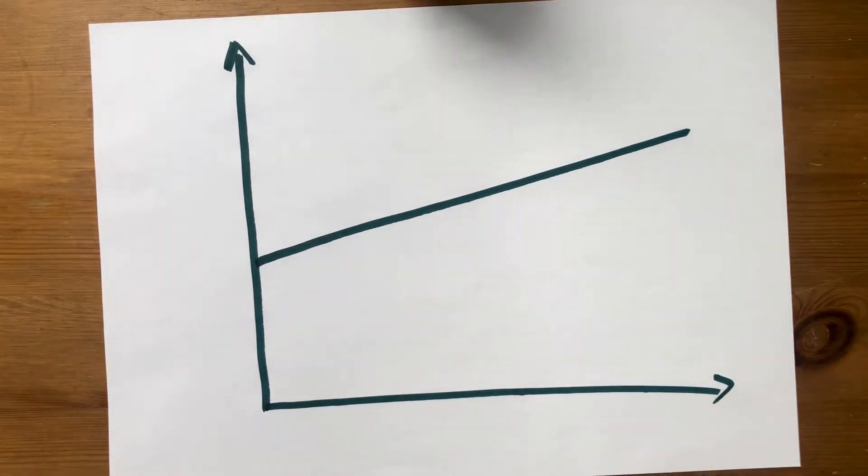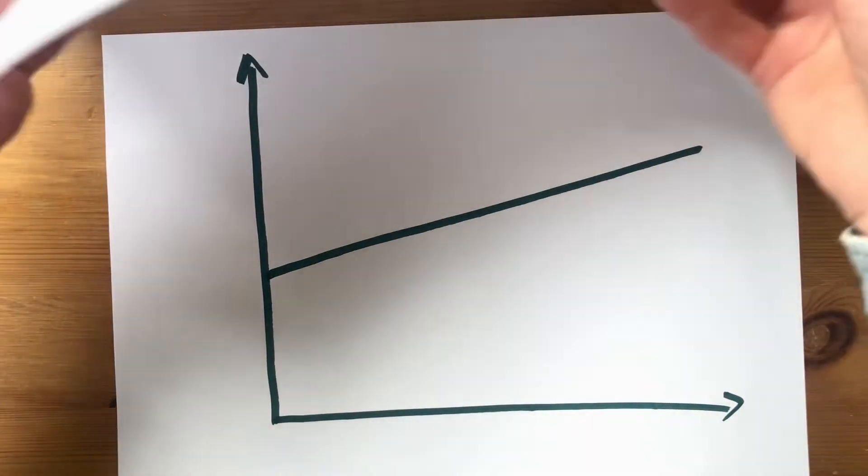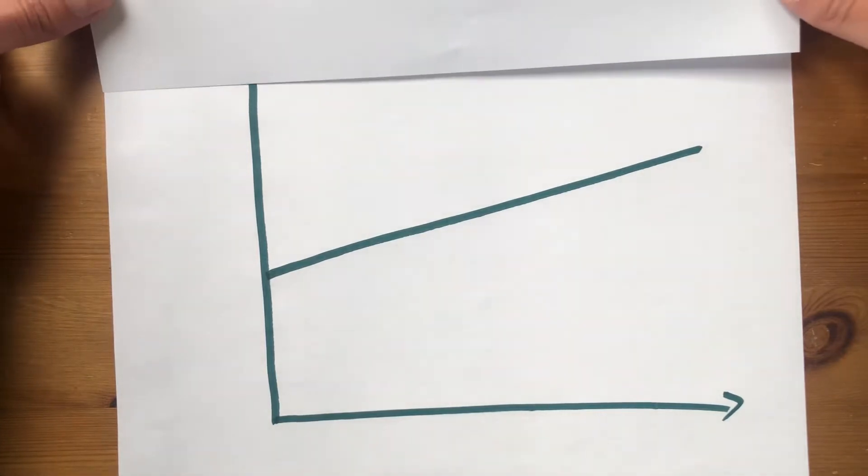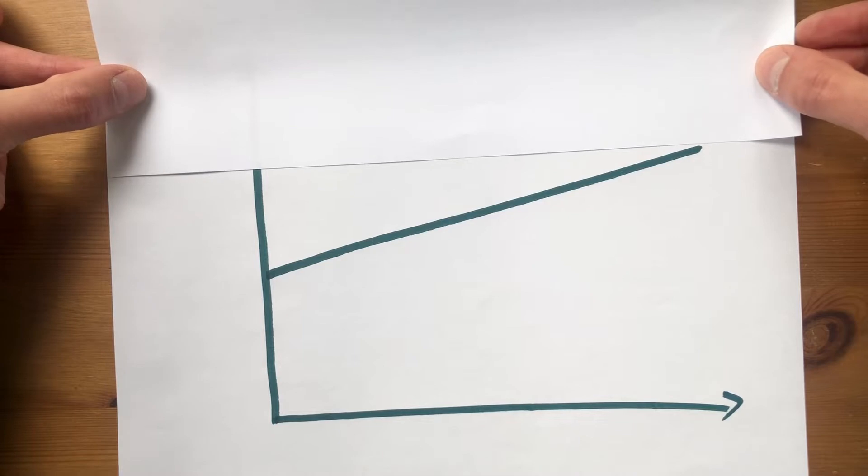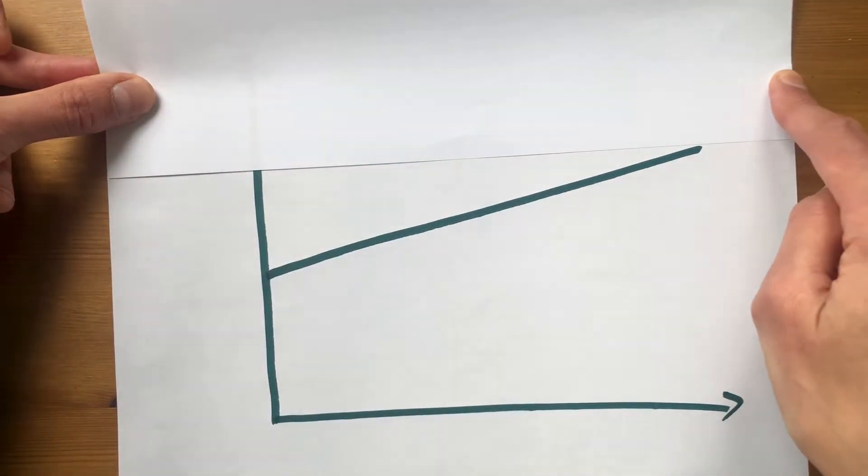Now let's imagine we plug that into a tube amp. So I'm going to get my very sophisticated impedance modeling device, which is another piece of A4 paper, and I'm going to start bringing it down to here.